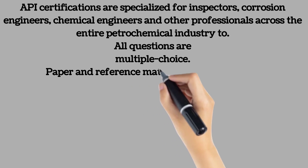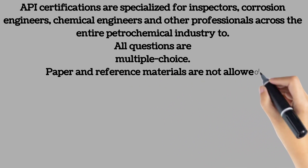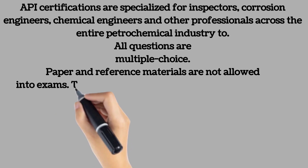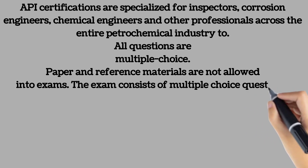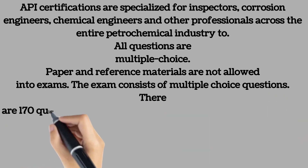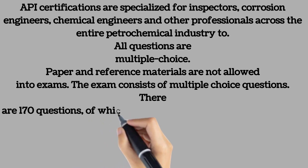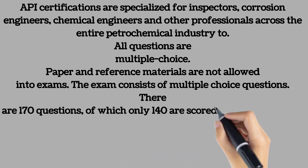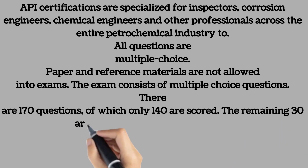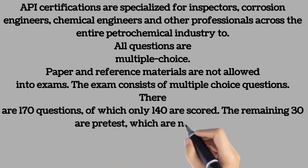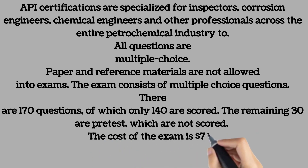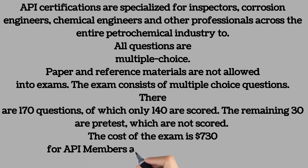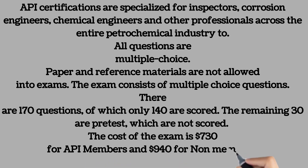Paper and reference materials are not allowed into the exam. The API 653 exam is 7.5 hours long. There are 170 questions, of which only 140 are scored; the remaining 30 are pre-test questions which are not scored. There are 110 closed-book questions and 60 open-book questions. The cost of the exam is $730 for API members and $940 for non-members.